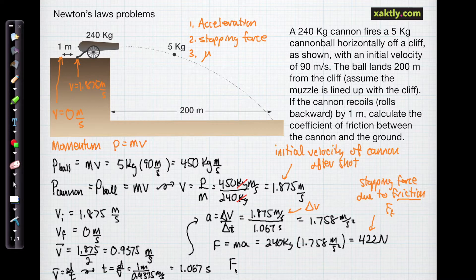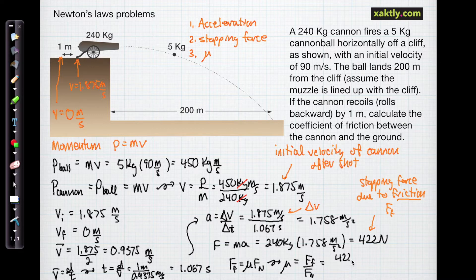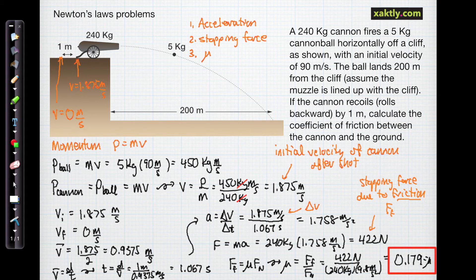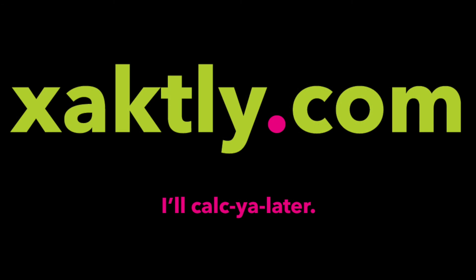Now the force of friction is the coefficient of friction, mu, times the normal force. So we can rearrange that to calculate mu. That's going to be the force of friction divided by the normal force. So we already have the force of friction, 422 newtons. And we divide that by the normal force, which we didn't calculate ahead of time. So that's 240 kilograms times 9.8 meters per second squared. And if we just work that out, we get mu is 0.179. And mu is unitless.